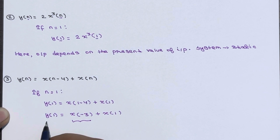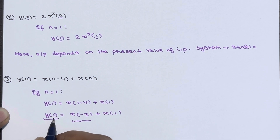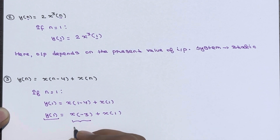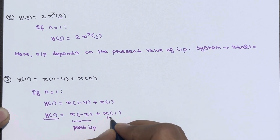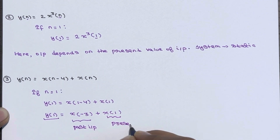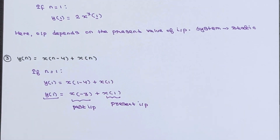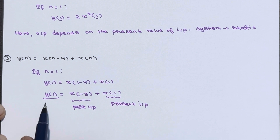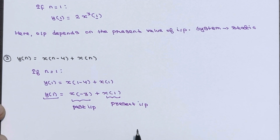At the n=1 instant, x(n-4) becomes x(1-4) = x(-3), which is a past input, and x(n) becomes x(1), which is the present input. So the output depends upon the past input and the present input, making it a dynamic system.